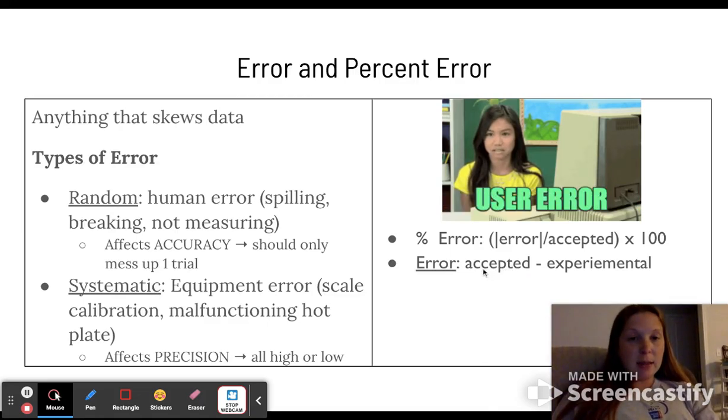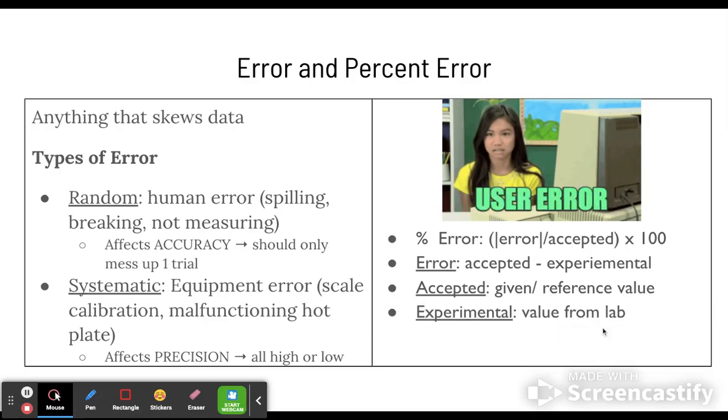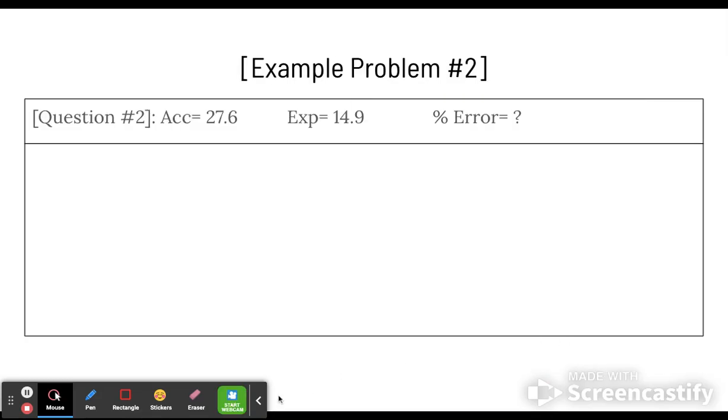And the error part here that's in absolute value is accepted minus experimental. So accepted is your reference point. Experimental is your lab data. This is what you get in the lab. So now let's go through an example together.